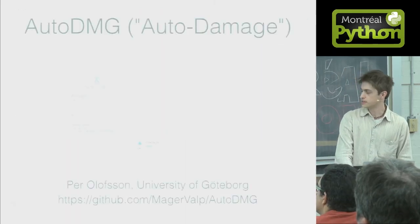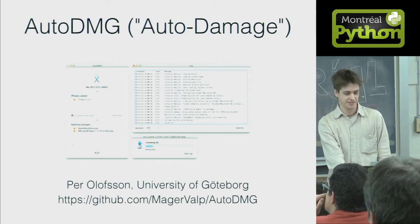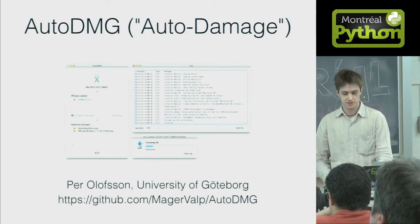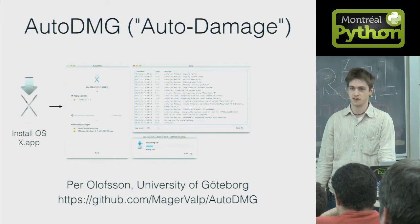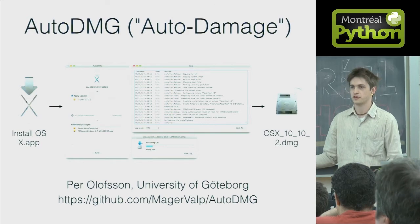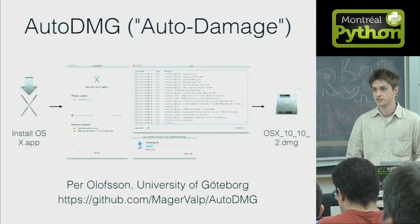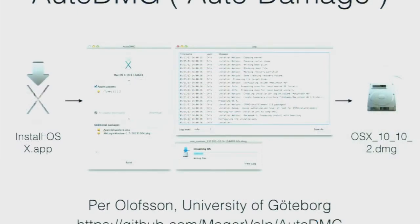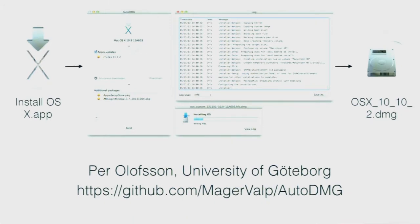Next up is AutoDMG by Per Olofsson at the University of Gothenburg. It takes your OS X installer application, runs the installer to a compressed disk image, and you wind up with an image you can re-image to machines quickly without ever having to do any manual steps to create an image. You can add additional apps and packages as well. All the application logic is done in Python, but there's an Objective-C bridge to provide the GUI native app behavior.